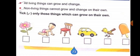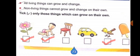Check your knowledge: tick only those things which can grow on their own. A baby boy crawling — yes, that shows growth and change. A chair — no, it is a non-living thing. A car — non-living thing. A bird — yes, a bird is a living thing and can grow and change.